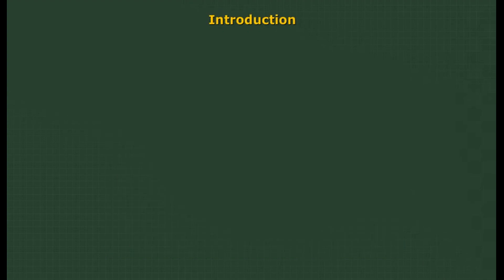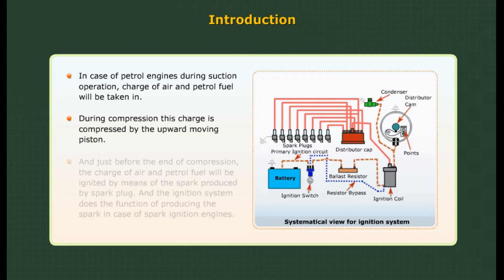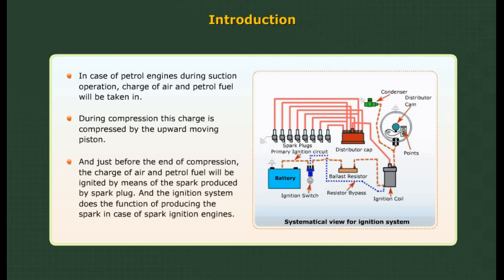Basic introduction to ignition system: In petrol engines, during the suction operation, a charge of air and petrol fuel is taken in. During compression, this charge is compressed by the upward moving piston, and just before the end of compression, the charge of air and petrol fuel is ignited by means of the spark produced by the spark plug. The ignition system performs the function of producing the spark in spark ignition engines.